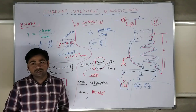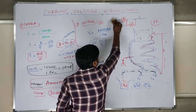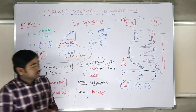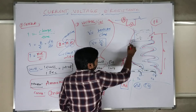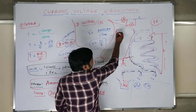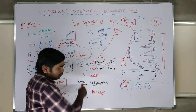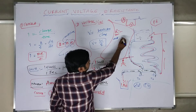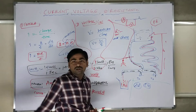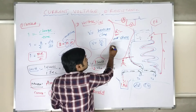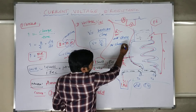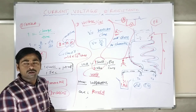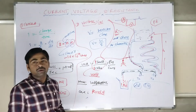The unit of resistance is ohms. To measure resistance, you use an instrument called an ohmmeter. The resistance unit is ohms, and the measuring instrument is the ohmmeter.